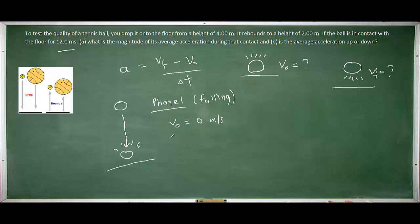The final velocity we don't yet know, so we'll leave that as an unknown. Any object falling freely vertically through space has an acceleration equal to negative 9.8 meters per second squared. We are also told that the tennis ball is dropped from a height of 4 meters. We must be careful to put a negative sign on the 4 meters because the ball is moving downward. From the equations of kinematics, we'll be able to calculate the final velocity of the tennis ball the moment before it hits the ground.